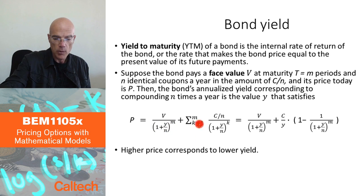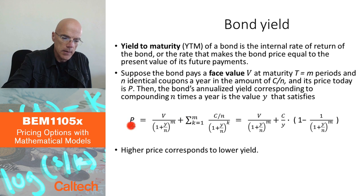Then I have to add the present value of the coupons. Each coupon is C over N, and they are paid from period 1 to period M. So I just discount by 1 plus Y over N to the K. These are the present value of the future payments.